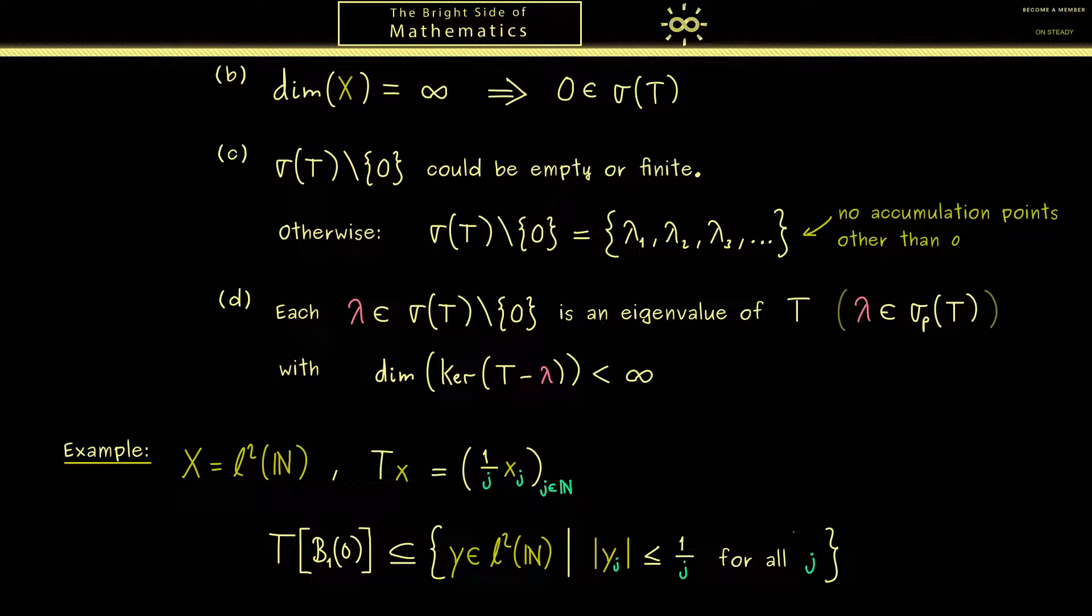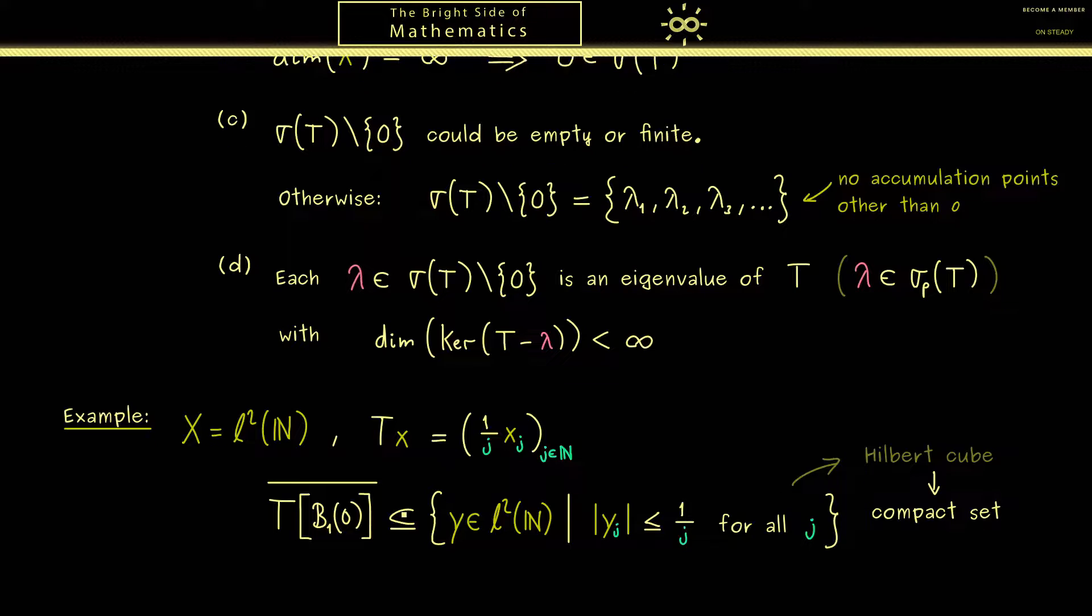However, now this right hand side here is a very famous set, it's the Hilbert cube. In fact, it's famous because it's an infinite dimensional cube that is still compact. In other words, it's not so hard to show that this is a compact set in L^2(N). However, this means the right hand side is a closed set, and therefore, if we form the closure of the left hand side, it's still contained in the right hand side. And from this, we now can conclude that the operator T here is a compact operator.